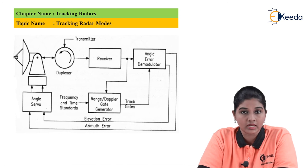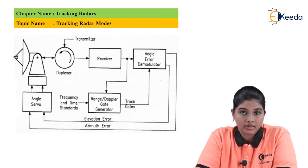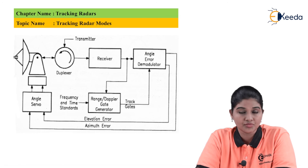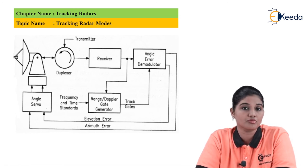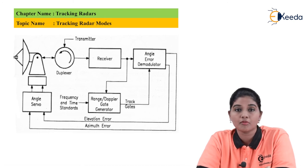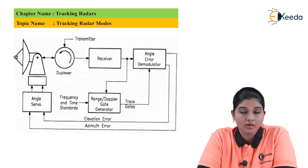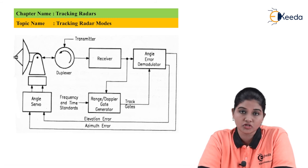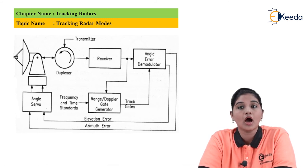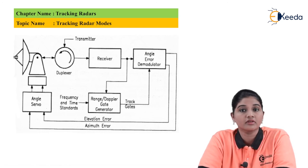In automatic tracking systems, the angular error must be provided by one target at a time. If one or more targets provide the angular error or angular velocity at the same time, it is not possible to detect the exact location or position of the target. The gating pulse is generated with the help of a range or Doppler gate generator circuit, and using the azimuth and elevation angle we can determine the exact location or maximum range up to which the radar system can detect the object.